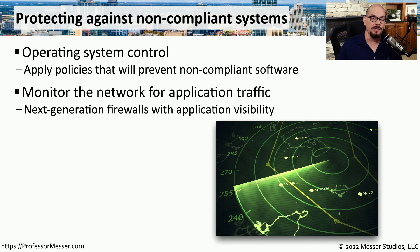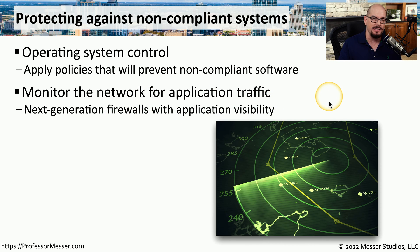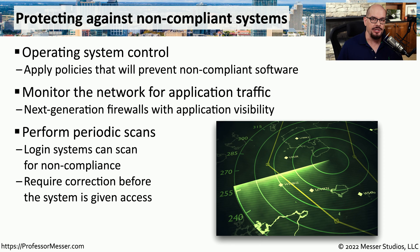There might also be ongoing monitoring of application traffic. If someone is using an application on the network that's not in the list of approved apps, you'll be able to see it with the traffic going across the network. These days, next generation firewalls have extensive visibility into these applications and can identify details about everything going across the network. You may also find a set of automated checks on your system run every so often to ensure it's up to date with the latest patches and not running anything outside the certified list of apps.